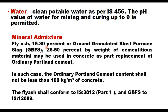When fly ash is used it should not be more than 15 to 30 percent of cementitious material, and when GGBFS is used it can be 25 to 50 percent by weight of cementitious material, as part of replacement of ordinary Portland cement. When using fly ash or GGBFS, ordinary Portland cement content should not be less than 100 kg per cubic meter of concrete. Fly ash shall conform to IS 3812 and GGBFS to IS 12089.